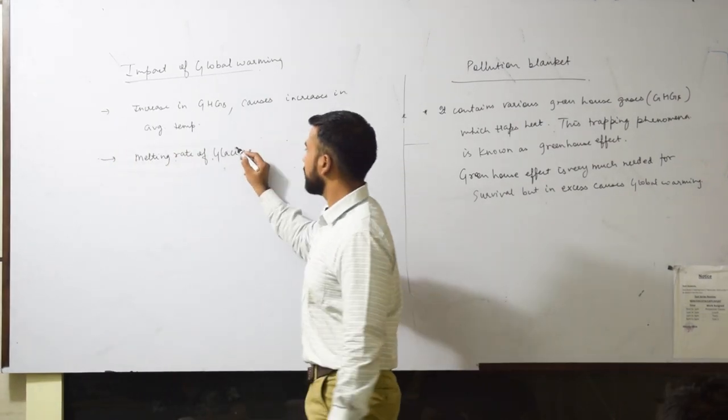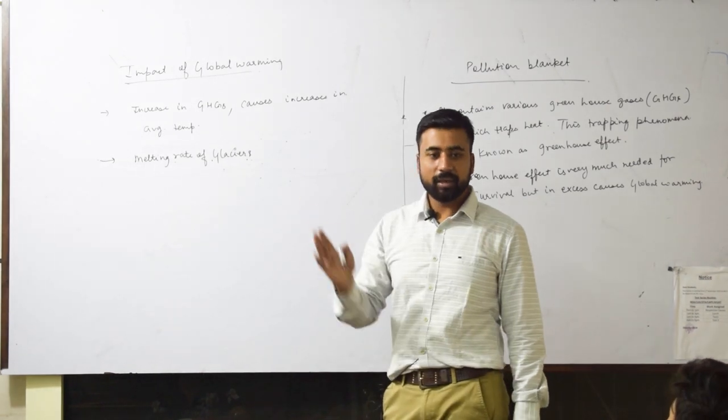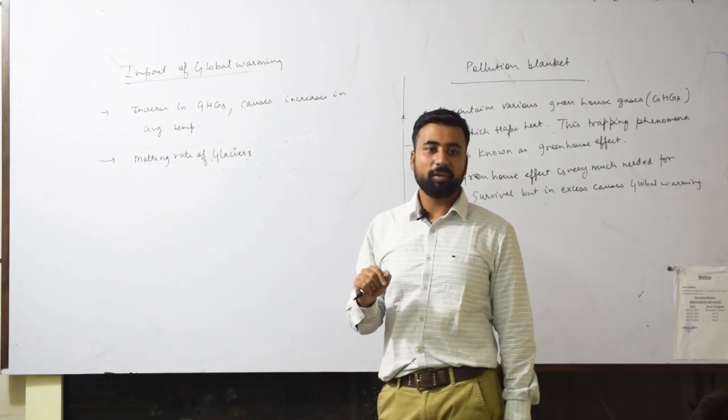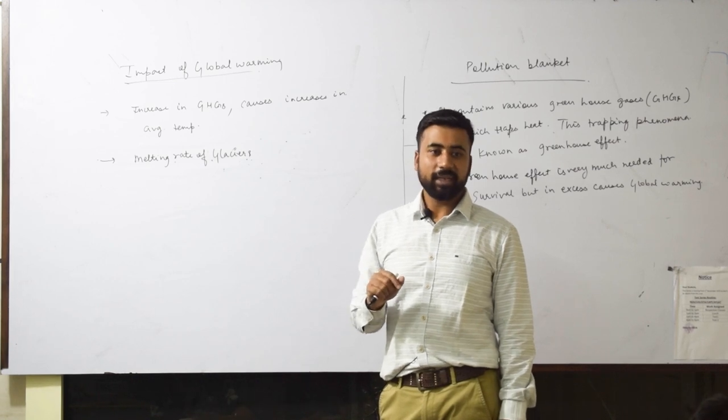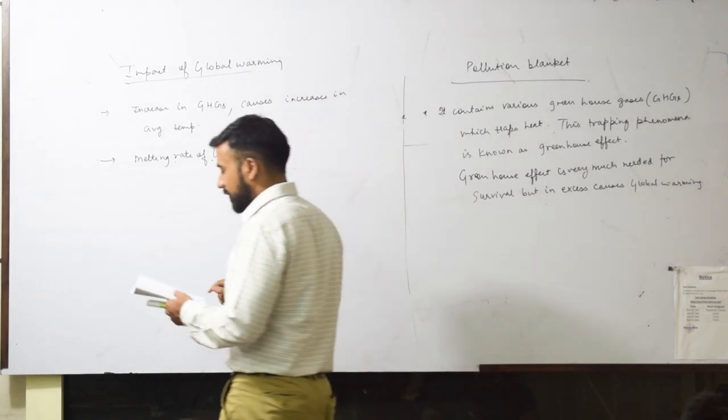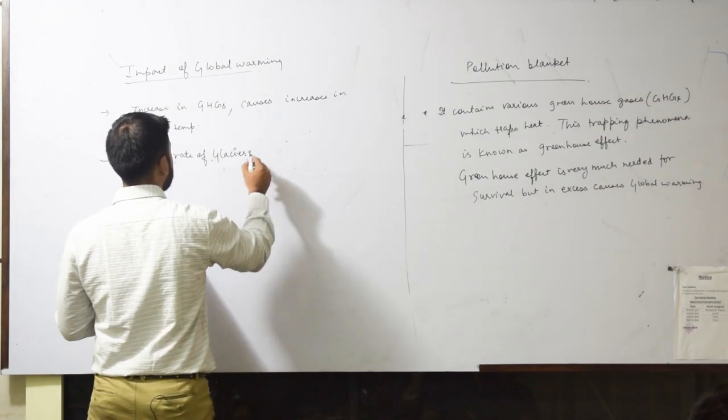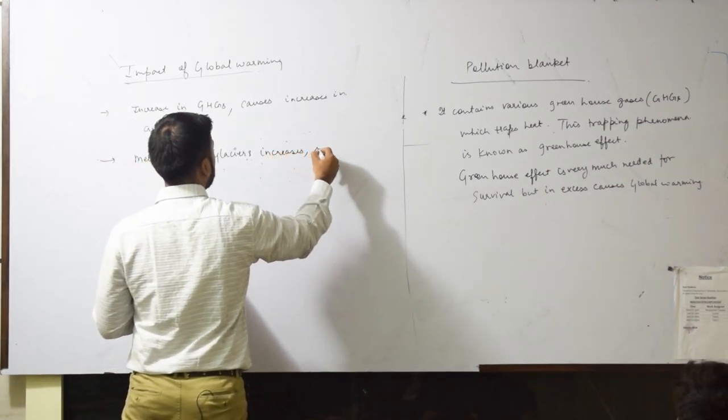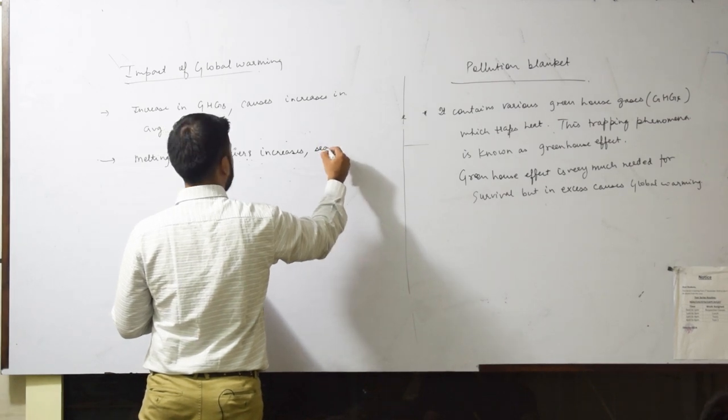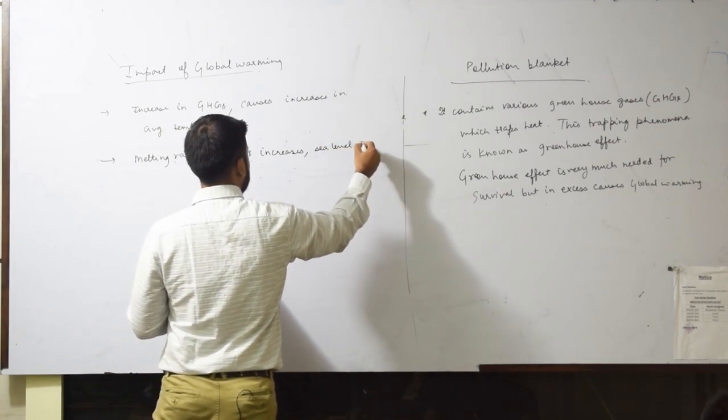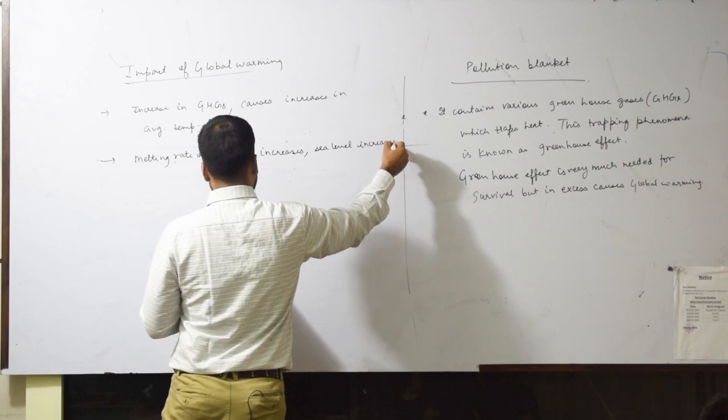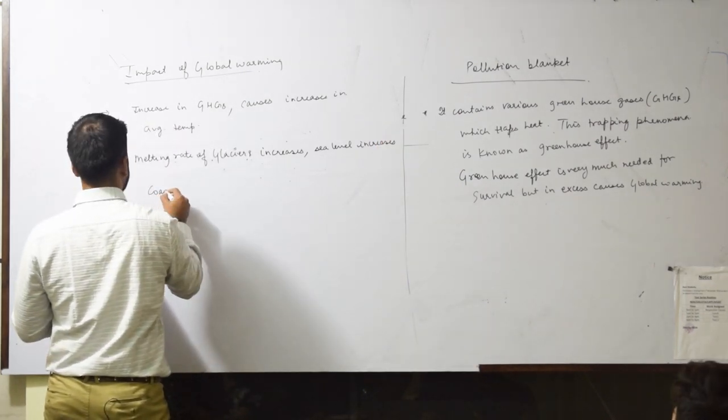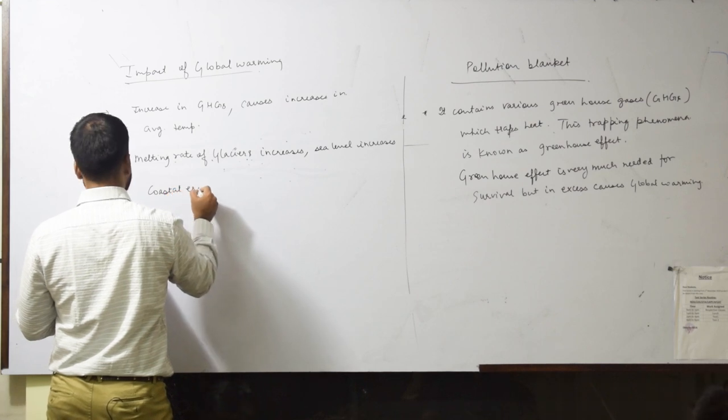So melting of glaciers is because of global warming, not because of insolation. Melting rate of glaciers increases. Followed by sea level increases. Sea level increases.